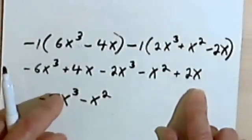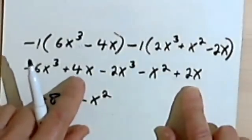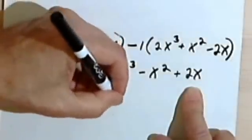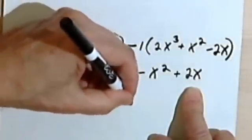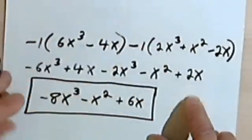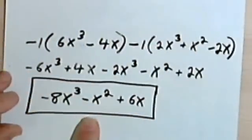Going down to my x's, I've got a 4x and a 2x. Well, those are combined to 6, so that's plus 6x. And that's going to be my answer.